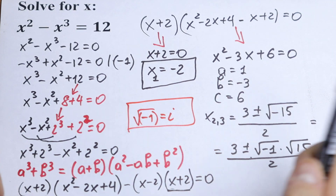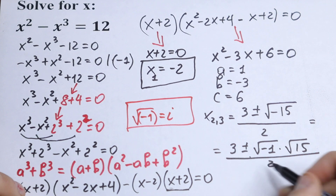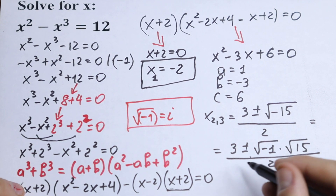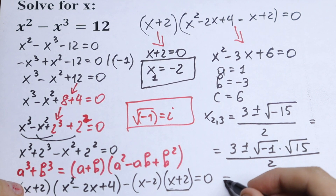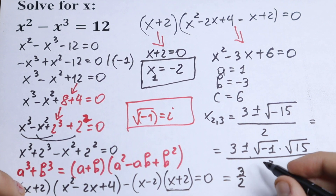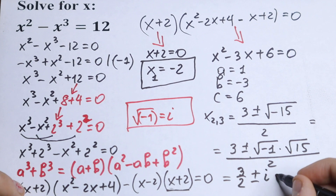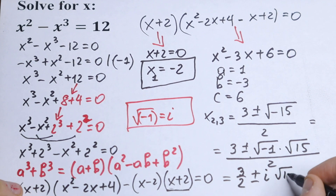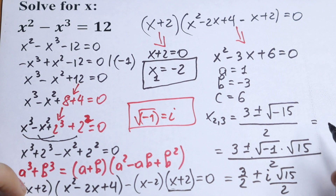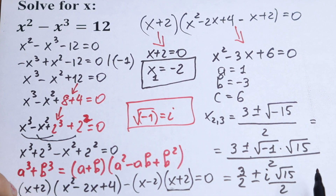So we just write i right here. Dividing 3 by 2 and this by 2, just simplifying a little bit. So we will have 3 over 2 plus or minus i times square root of 15, over 2.